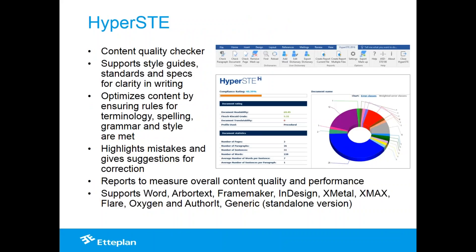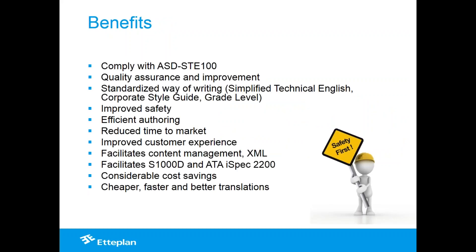For quality control, we use a tool called HyperSTE. It sits on top of your authoring environment and provides quality assurance and quality control, measuring content compliance with ASD STE100 — or a subset if you're not in aerospace and defense. It allows you to go to market faster with reduced content, lower documentation costs, and more efficient authoring. HyperSTE is a content quality checker supporting style guides, controlled language authoring, and standards. It optimizes content by ensuring terminology, spelling, grammar, and style rules are met, generates quality assurance reports, and is available as a plugin for Word, Arbortext, FrameMaker, InDesign, XMetal, XMAX, and more.